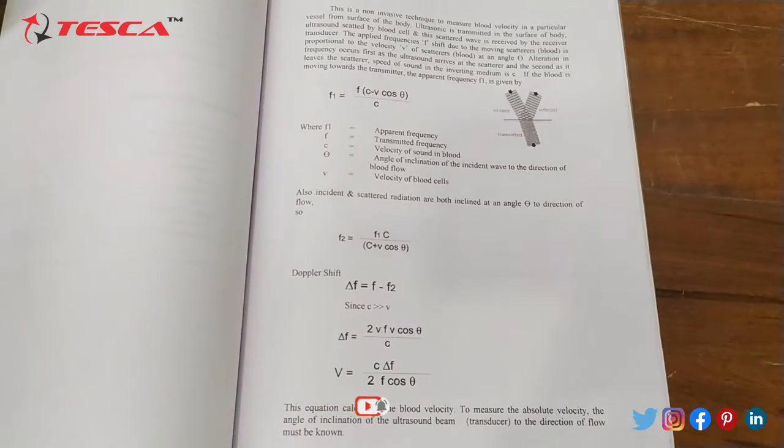After calculating F1 we can calculate F2. That is F2 is equal to F1 into C upon C plus V cos theta. Then we can calculate Doppler shift, that is delta F is equal to F minus F2. After that we will calculate V. V is equal to C into delta F upon 2 into F cos theta. And that is how we can calculate the velocity.